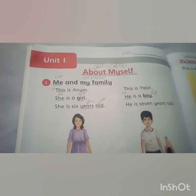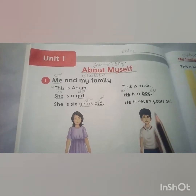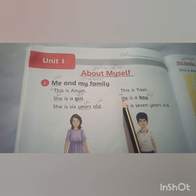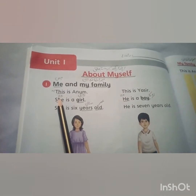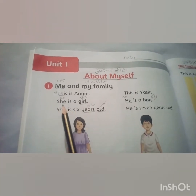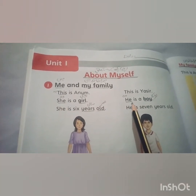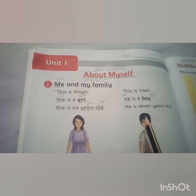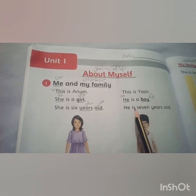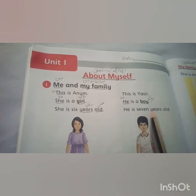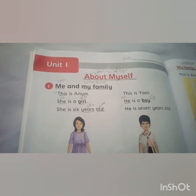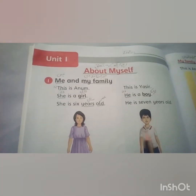This is Yasir — یہ Yasir ہے، یہ اس کا بھائی ہے۔ He is a boy — وہ ایک لڑکا ہے۔ یہاں پہ he کا مطلب وہ اور she کا مطلب بھی وہ ہے، لیکن فرق یہ ہے کہ we use she for girl and we use he for boy۔ He is seven years old — وہ سات سال کا ہے۔ Anam six years کی ہے اور Yasir seven years کا ہے۔ They are siblings — یہ بہن بھائی ہیں۔